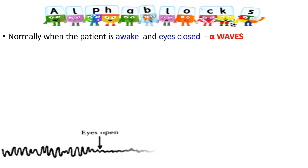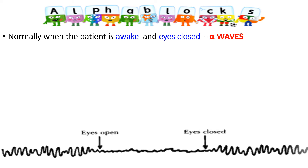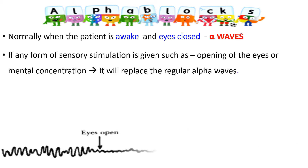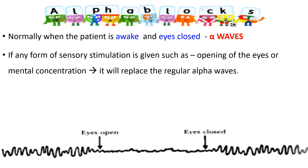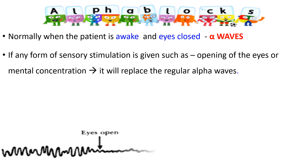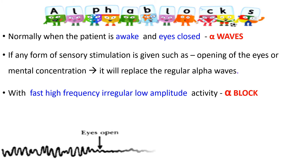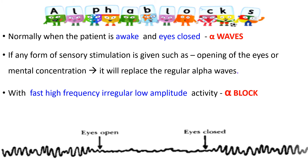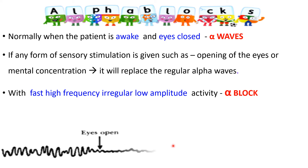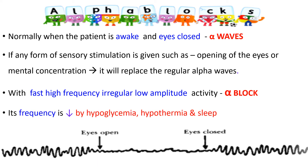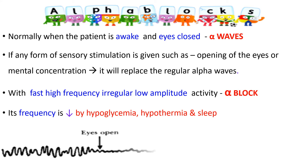Alpha block: normally when the patient is awake with eyes closed, alpha waves are obtained. If any form of sensory stimulation is given — such as opening the eyes, mental concentration, thinking, or arousal — it will replace these regular alpha waves with fast, high-frequency, irregular, low-amplitude activity. This is called the alpha block. The frequency of alpha waves is decreased by hypoglycemia, hypothermia, and sleep.